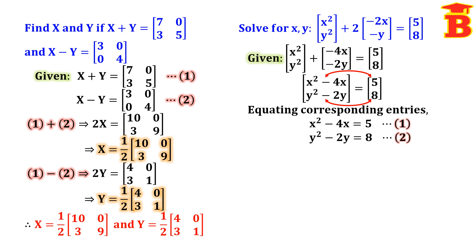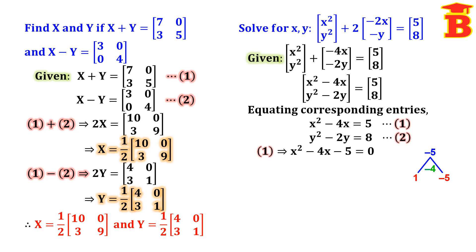Equating corresponding entries gives two equations. Note these are quadratic equations, so solve by the factor method. Equation 1: x² minus 4x minus 5 equal to 0. The product is minus 5 and the sum is minus 4, so the two numbers are 1 and minus 5. The factors are (x + 1)(x − 5) equal to 0.